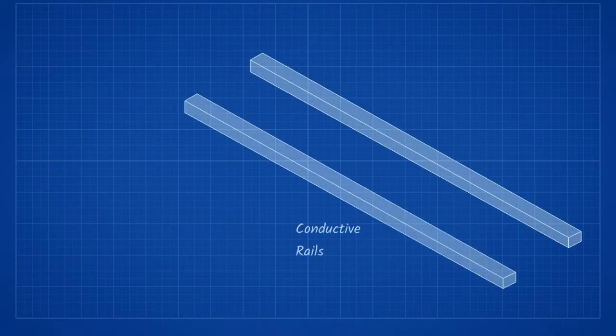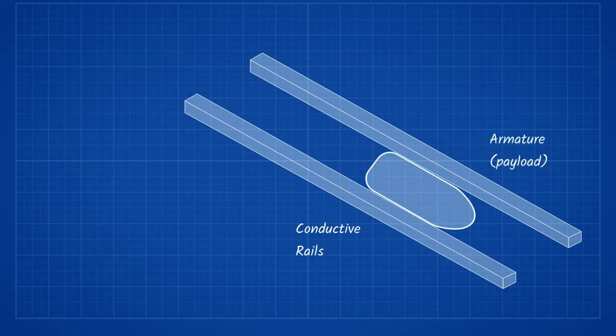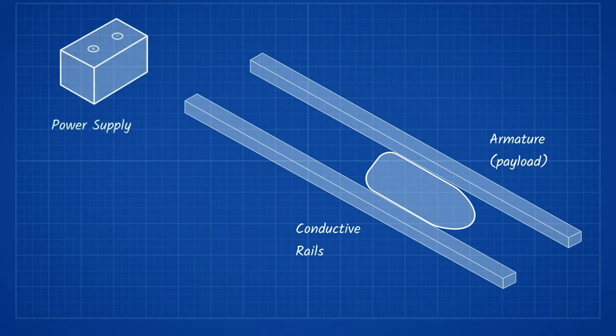A mass driver is, in essence, a railgun, which is two rails that act as conductive wires, an armature which houses the projectile and bridges the gap between the wires, and a massive power supply which can produce in the order of millions of amps of current.